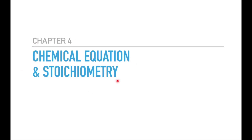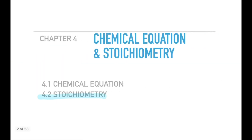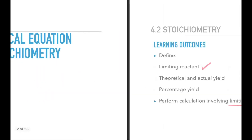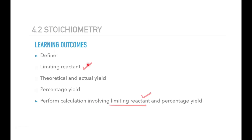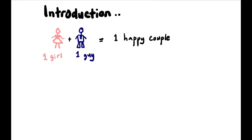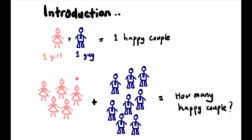Hi guys, welcome back to the channel. Still in chapter 4, chemical reaction stoichiometry, and we're going to focus on 4.2 stoichiometry. Today we're going to learn about limiting reactant and some calculations. Introduction: let's say to produce one happy couple we must have one girl and one guy. What if we have this amount of girls and this amount of guys — how many happy couples can be produced? We got five girls and eight guys.